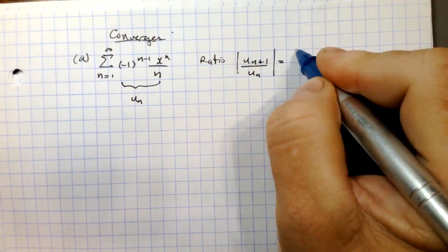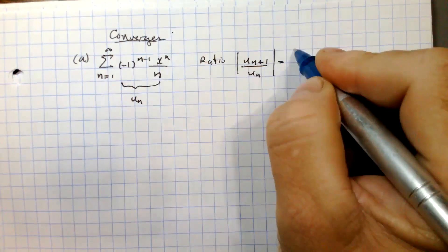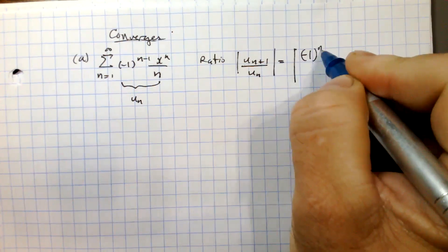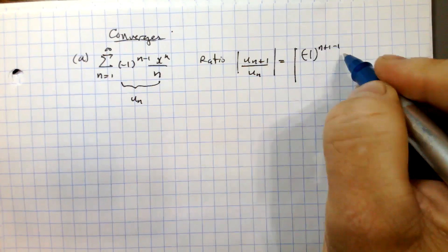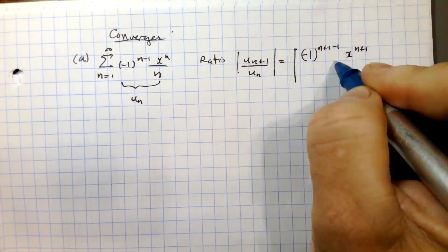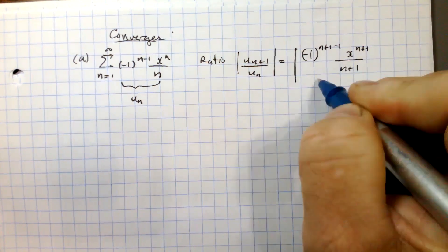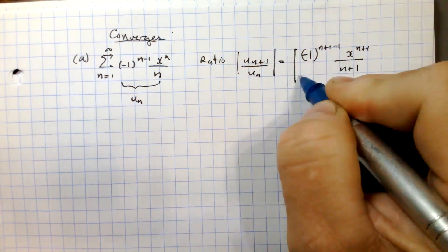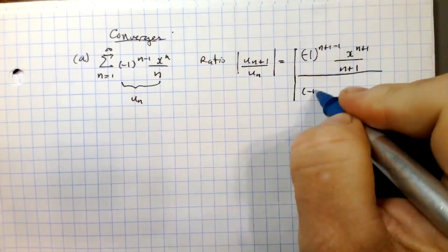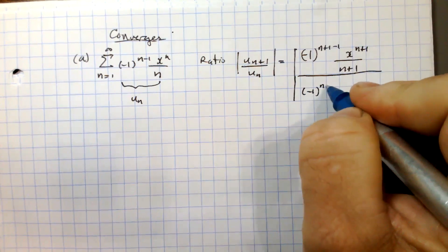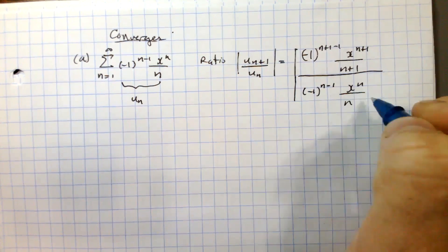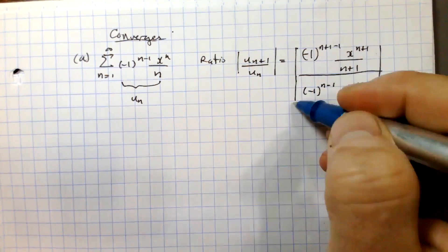This is going to be equal to: u_(n+1) is negative 1 to the (n+1−1), times x to the (n+1), divided by (n+1). That's u_(n+1), divided by negative 1 to the (n−1) times x to the n over n.